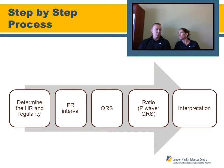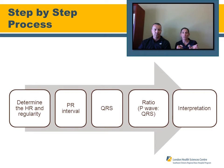If it's exactly three boxes, that is 120 milliseconds — it must be less than three small boxes to be considered narrow. Then look at the ratio of P waves to QRS complexes: a P wave followed by a QRS is a one-to-one ratio; two P waves and one QRS would be a two-to-one ratio. Finally, attempt to interpret the overall ECG strip including the heart rate, using the guidelines from the next few slides.